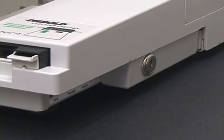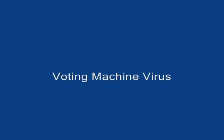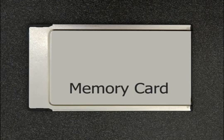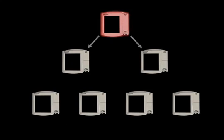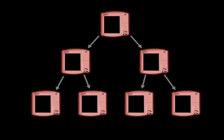Due to design flaws in the Diebold AccuVote TS voting machine, it is possible to construct a computer virus that infects these machines and spreads automatically from one machine to many others. To illustrate this, we have constructed a demonstration virus in our lab. The machines use removable memory cards to distribute software updates and store the results of elections. The memory cards function similarly to floppy disks or thumb drives on ordinary PCs. Memory cards act as carriers for the virus. When a memory card is inserted into an infected machine, the machine copies the virus onto that memory card. If the memory card is removed and later put into another machine, the virus spreads from the memory card to the new machine. In this way, the virus can spread from one infected machine to an entire population of machines.